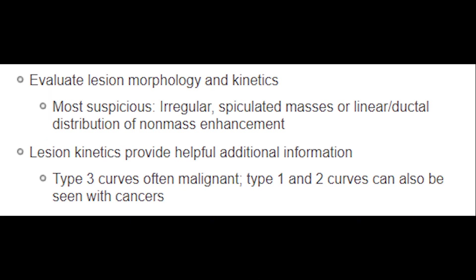Now let's discuss how we interpret breast MRI images. The key concept is systematic image interpretation. First, assess background enhancement on MIP images, then identify enhancing lesions, determine morphology and kinetics, and review the lesion on different MRI sequences: T1 fat-suppressed pre-contrast, T1 non-fat-suppressed pre-contrast, T2 fat-suppressed, and T2-star images. Diffusion-weighted images are also recommended to evaluate the malignant or benign nature of lesions. Finally, correlate MRI findings with mammography and ultrasound.